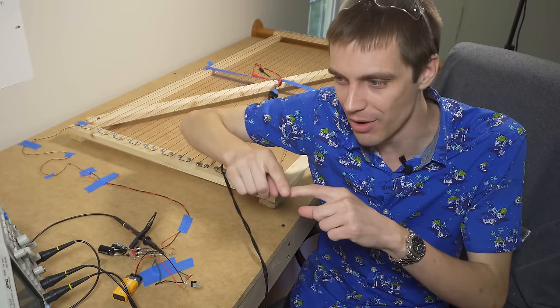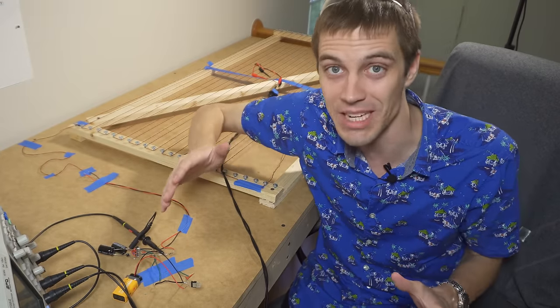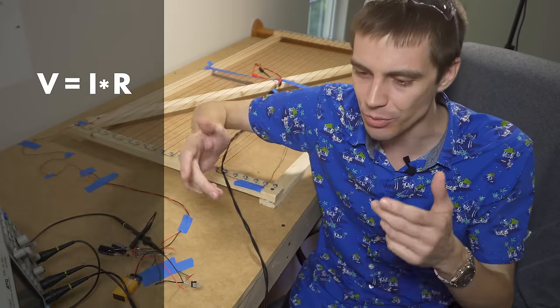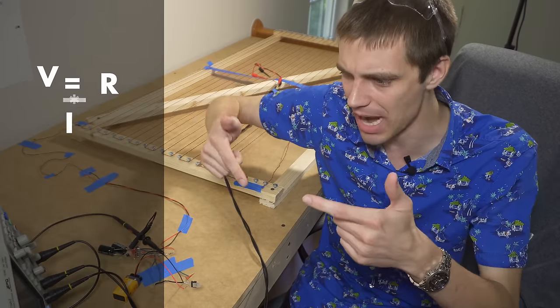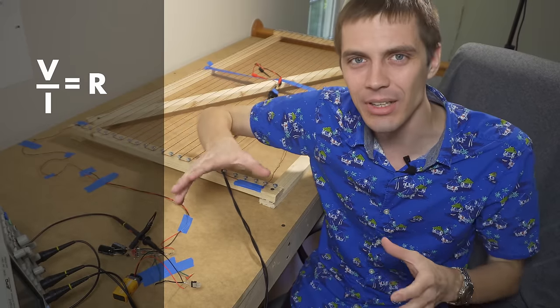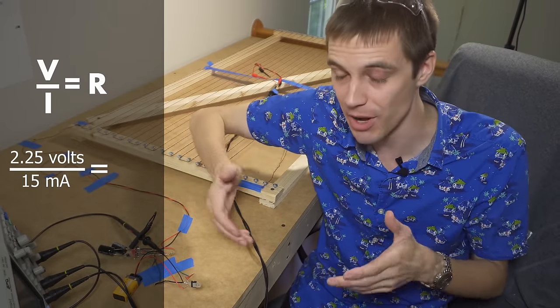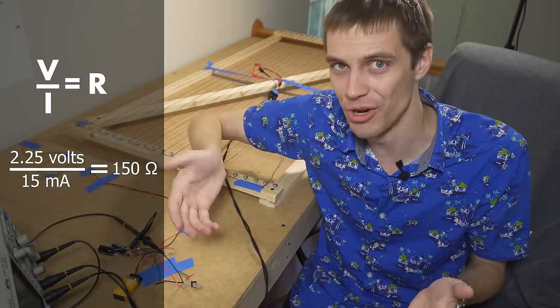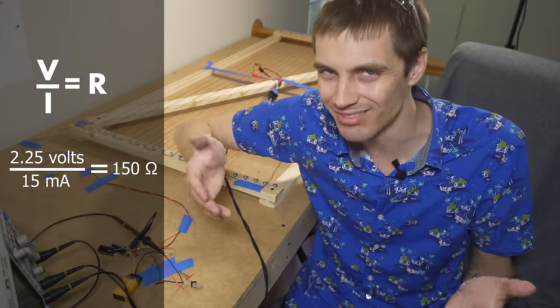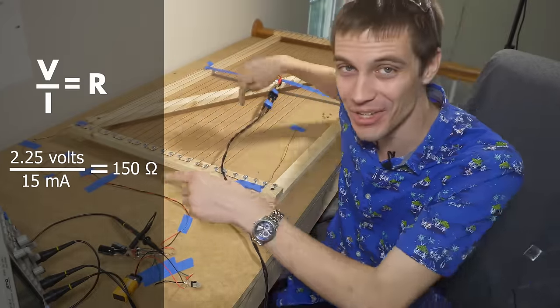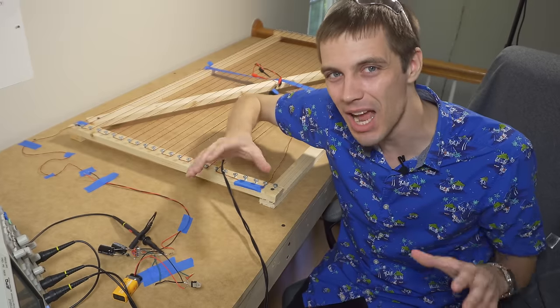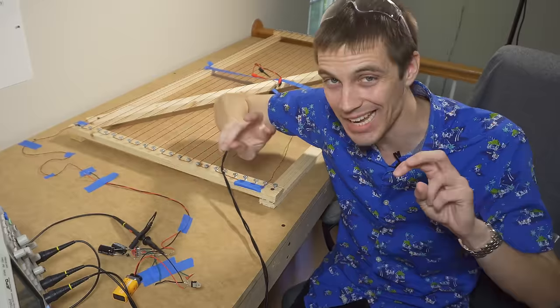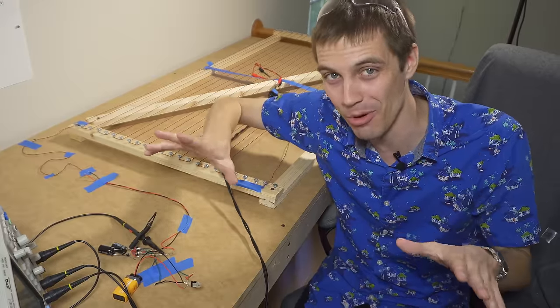Earlier I said that this wave is about two and a quarter volts tall and about 15 milliamps of current. If you rearrange Ohm's law from V equals IR to V divided by I equals R, we can calculate that this voltage and current correspond to a resistance of about 150 ohms. But that's really weird because there isn't a 150 ohm resistor anywhere in this circuit. But at the same time, that's sort of what this wave is like expecting to see.